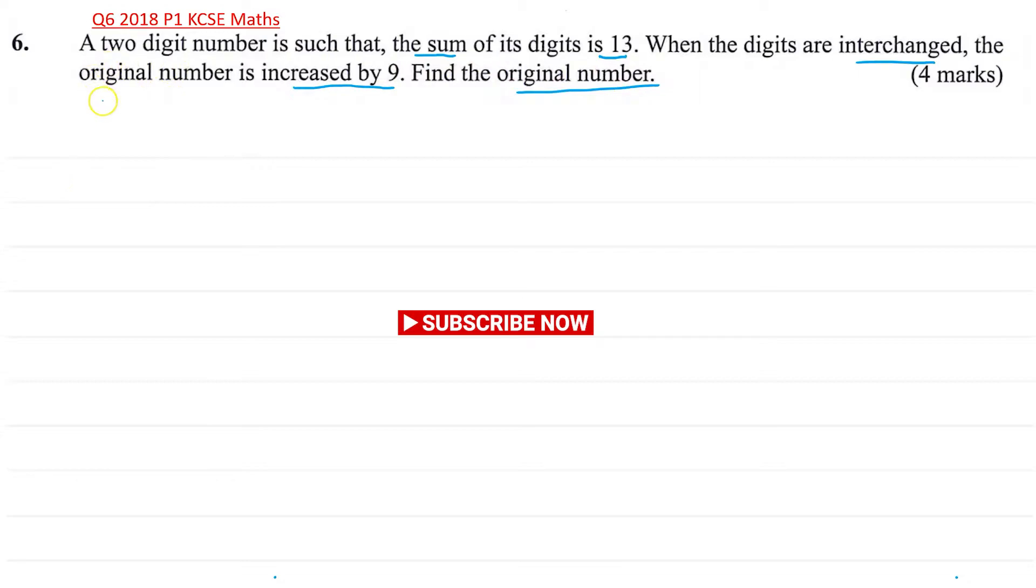Right, so let's say our two-digit number is made of XY because we don't know. Now you can choose any letters that you want. You can make it AB, you can make it CD, whatever. I'm choosing XY.